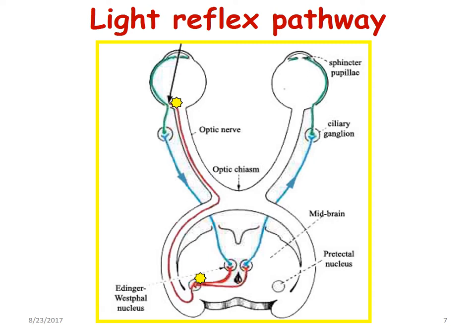That is where the first order neuron stops. The next order neuron from there — the pre-tectal nucleus — goes into the Edinger-Westphal nucleus of both sides, the left as well as the right.